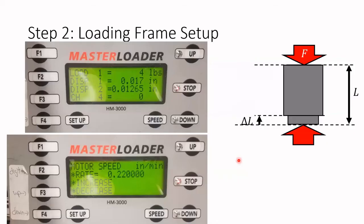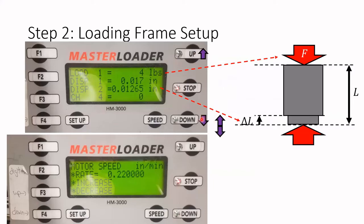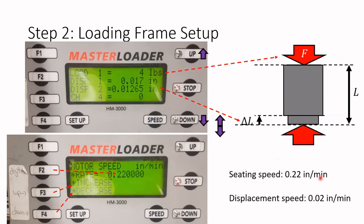Now we start operating our loading frame. As a review from laboratory one, our two key measurements are load and displacement. By pressing up or down we move the frame, and to change speed we click speed and use F2, F3, and F4. During seating and during displacement we use a speed of 0.22 inches per minute.